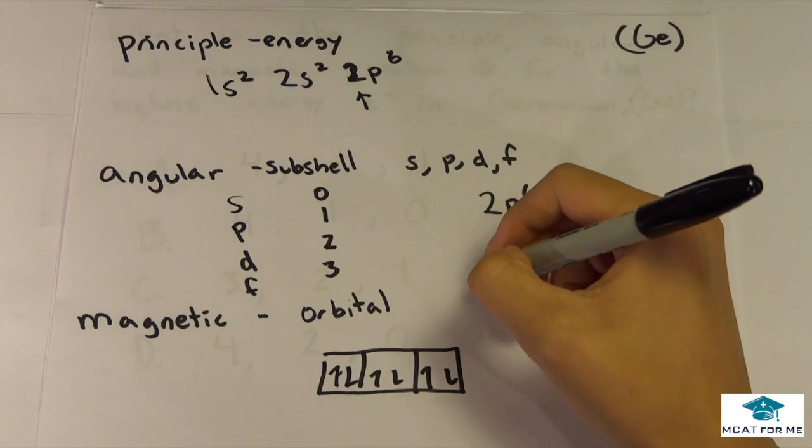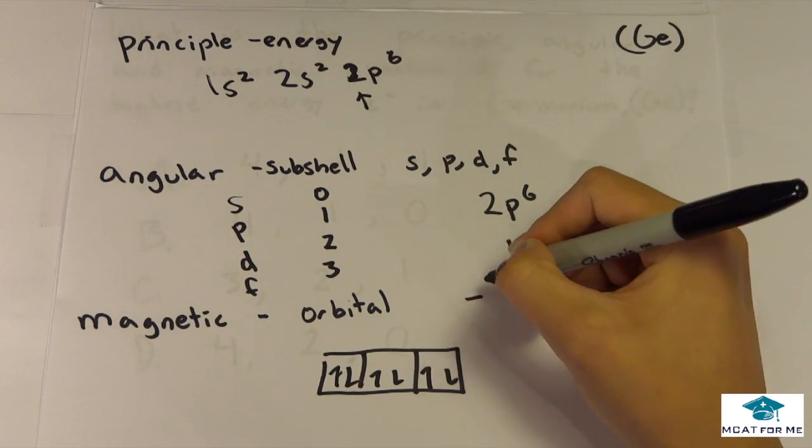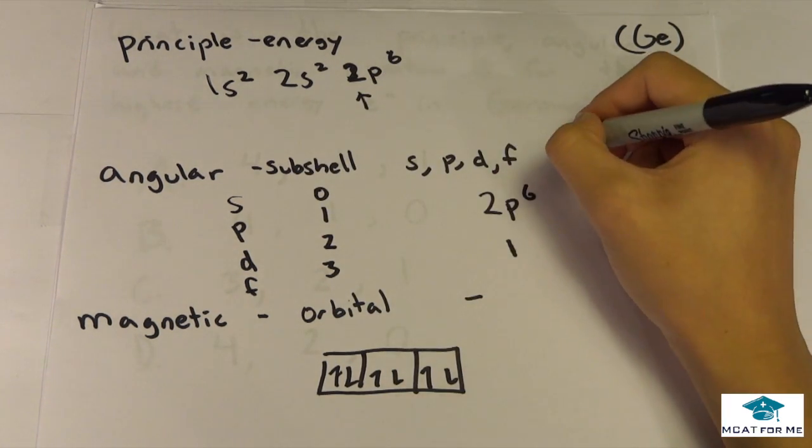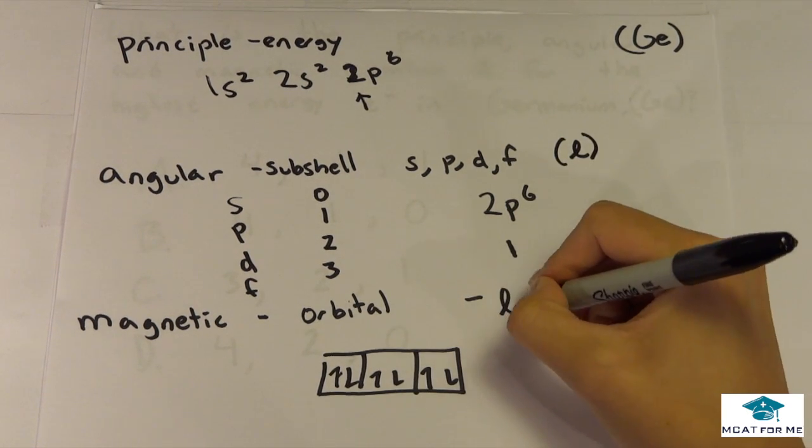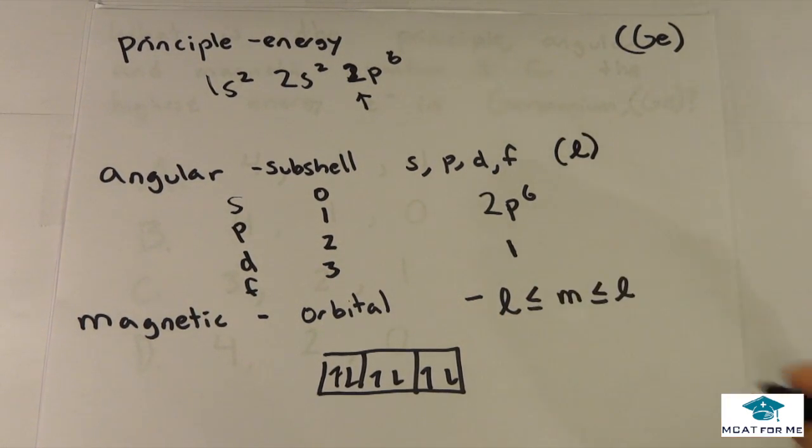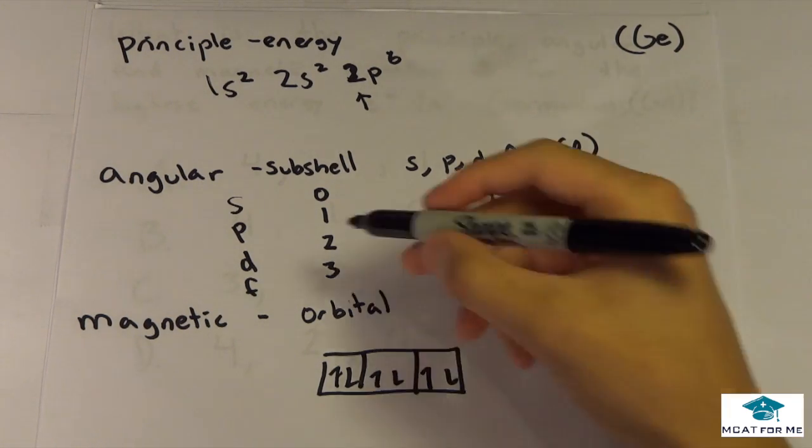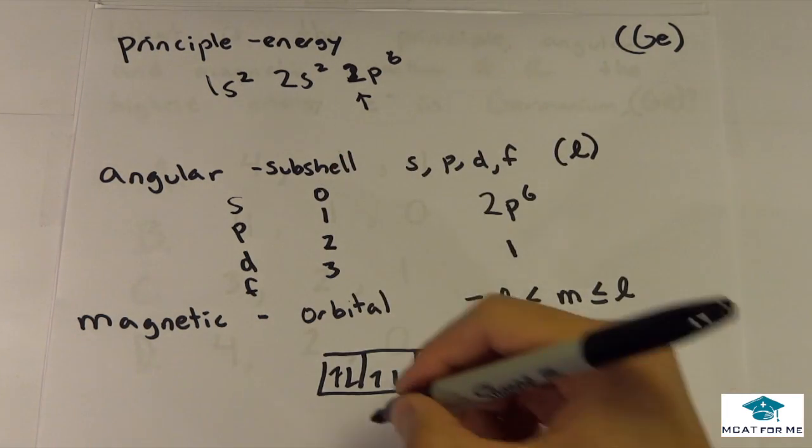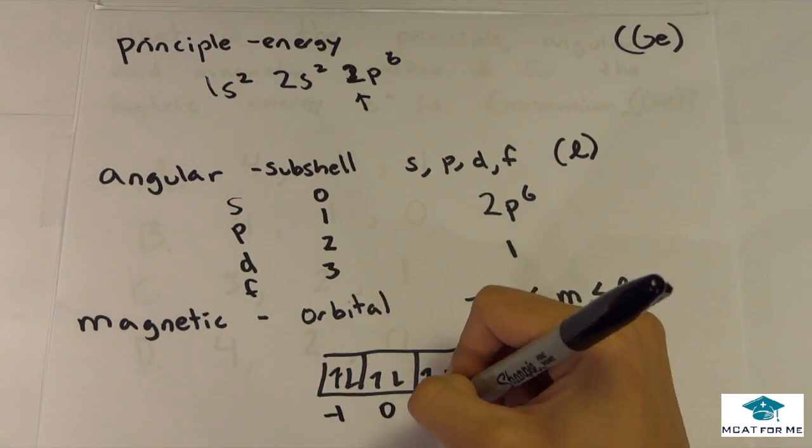So we know that the number has to go from negative, and this is the angular quantum number, which we denote as L. So negative L, and we'll call this M. So it has to go from negative L to L, and we know that L for a p block is 1. So we know it has to go from negative 1, 0, or 1.